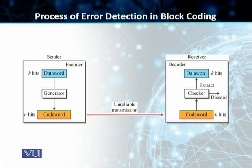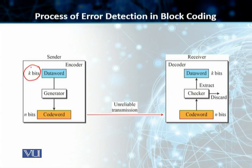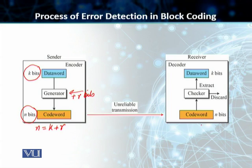As you can see on the slide, we have the block coding example both at the sending end and at the receiving end. The sender creates a codeword out of the data words by using a generator, and that generator is applying the rules and procedures of encoding. The sender divides the message into blocks of k bits each, the generator adds some redundancy bits R, and the result is n bits — the codeword where n equals k plus r — which is sent to the receiver.